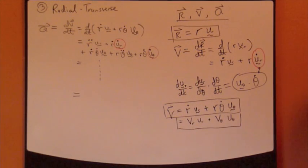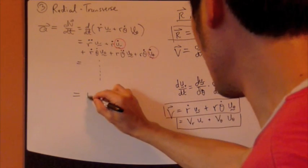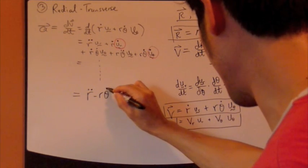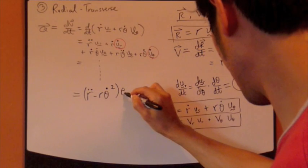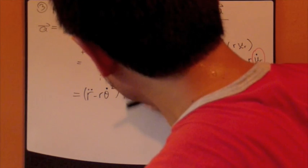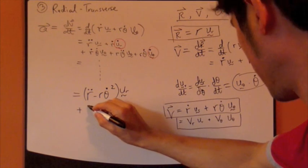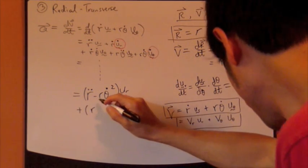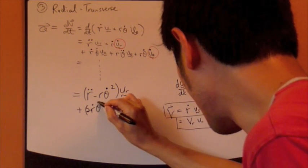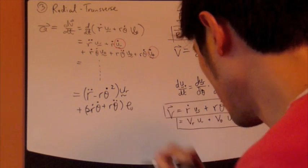Again, it turns out there are two terms. And the first term is r_double_dot minus r·θ_dot² in the u_r direction. That's the first term, plus 2·r_dot·θ_dot plus r·θ_double_dot u_θ.